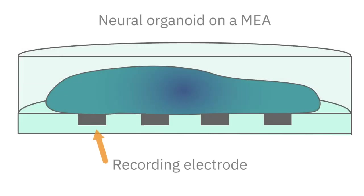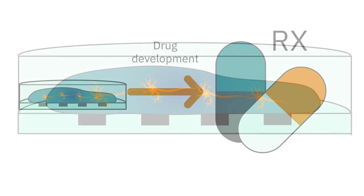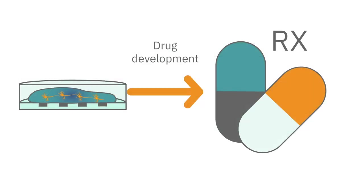A neural organoid is a three-dimensional human stem cell-derived in vitro culture system that can be studied in a dish. Over time, they can develop complex neural activity similar to the network function present in human fetal brains. This similarity can offer novel therapeutic approaches to neural disease modeling and drug development.